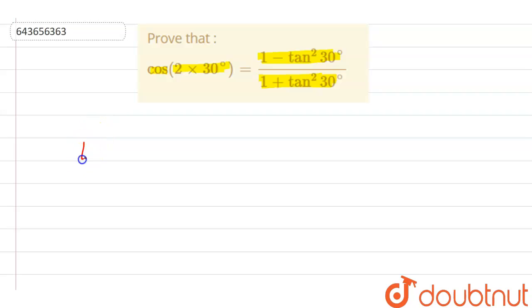Now let's first solve the LHS. Here you can see at LHS we have cos(2×30°), which we can also write as cos(60°), and we know that cos(60°) equals 1/2.